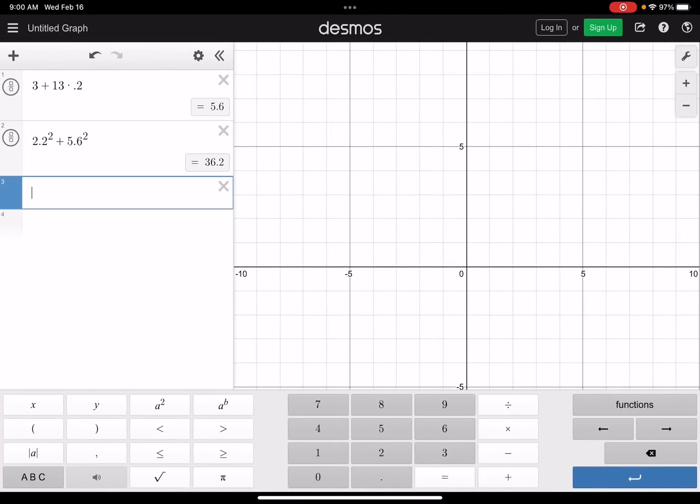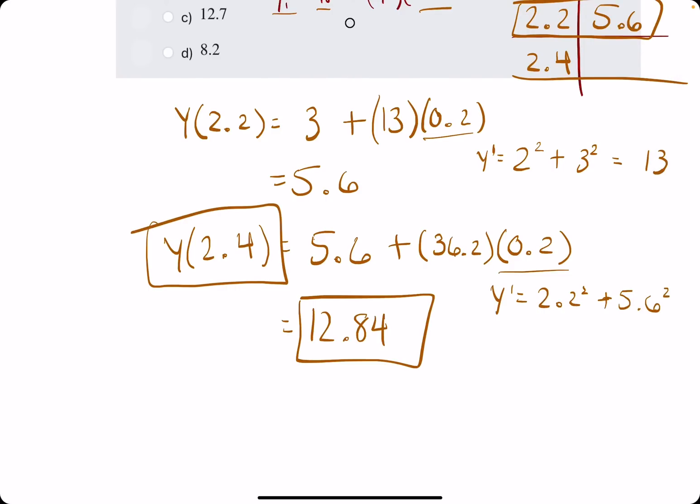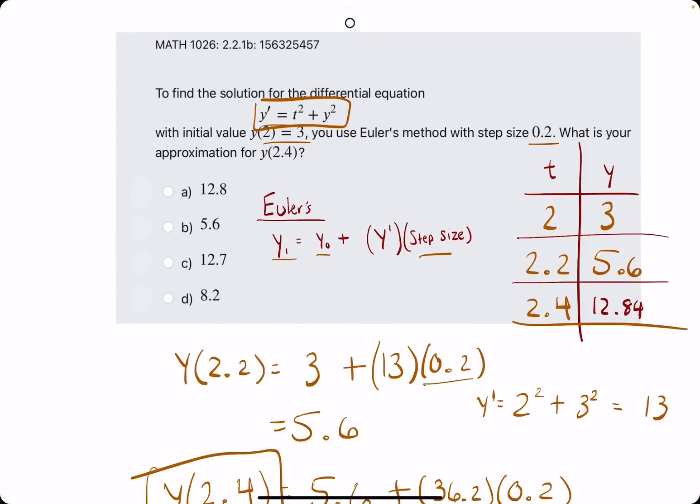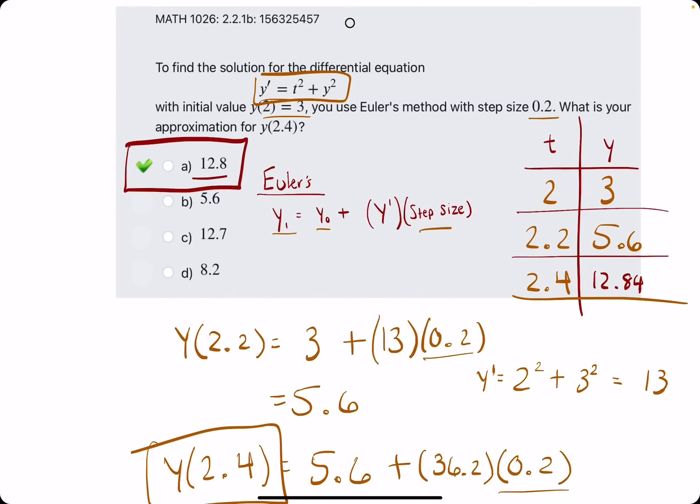Let's go ahead and calculate this. In Desmos, we have 5.6 plus 36.2 times 0.2, and we get 12.84 for the y value corresponding to the t value of 2.4. So I'll just write it in here, 12.84. So we are looking for 12.84-ish. So that looks like option A. Once we break out the eraser, we see that A is our answer.